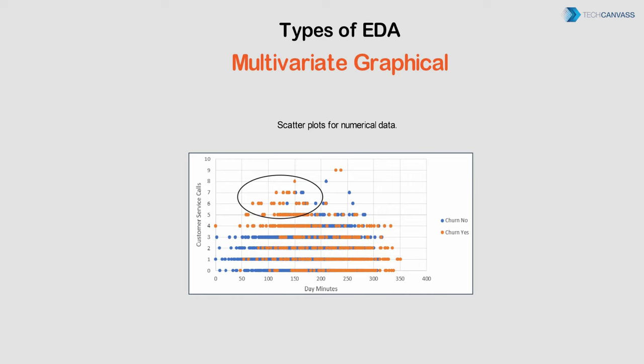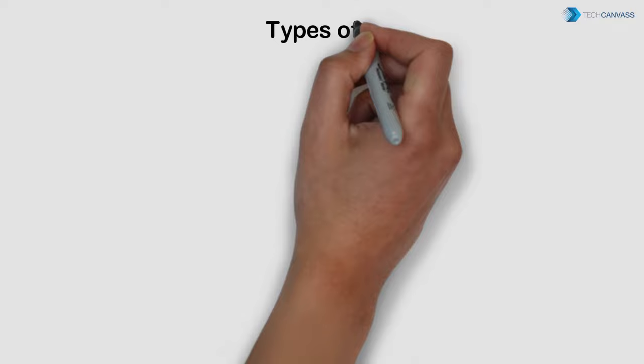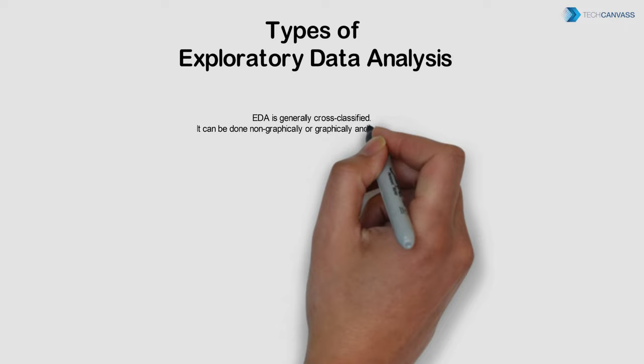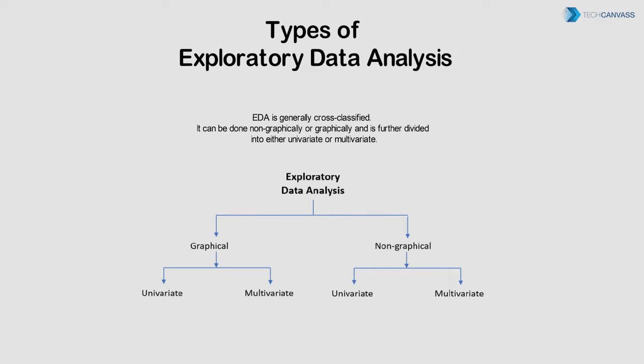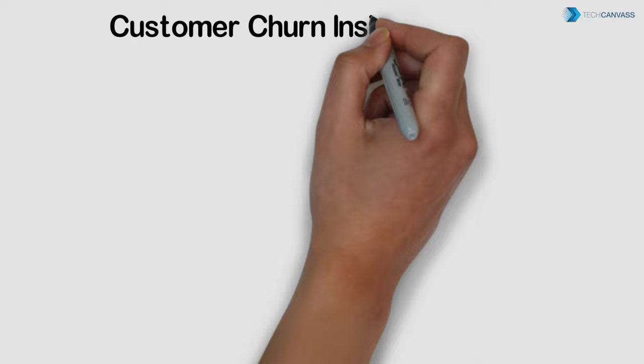For graphical analysis, scatter plots help visualize two quantitative variables — with one variable on the x-axis and another on the y-axis. They saw a pattern that customers with low day minutes and high service calls have high churn rates. So EDA is generally cross-classified: it can be done non-graphically or graphically, and is further divided into either univariate or multivariate. Further analysis revealed many insights which proved the importance of EDA before the actual analysis.